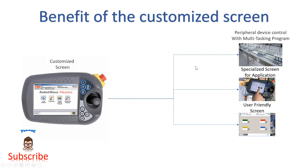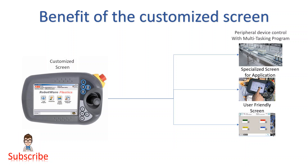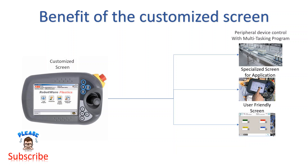The third benefit, and one of the most important things, is a user-friendly screen. You can create a screen that the user can clearly understand. In the program data screen the operator can only see names, but in the customized screen you can add pictures and many other things in different ways — a highly visualized screen that they can understand very easily.